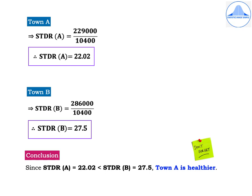The most important step is the conclusion. Since STDR(A) = 22.02 is less than STDR(B) = 27.5, town A is healthier.